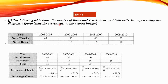We will be doing Exercise 7.1, Question 1. The following table shows the number of buses and trucks in nearest lakh units; draw a percentage bar diagram. In 2005-2006, trucks were 47 and buses were 9. In 2007-2008, trucks were 56 and buses were 13. In 2008-2009, trucks were 60 and buses were 16. In 2009-2010, it was 63 and 18. We have to show the percentage bar graph.